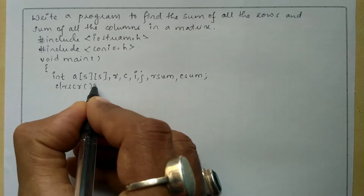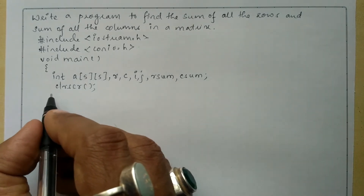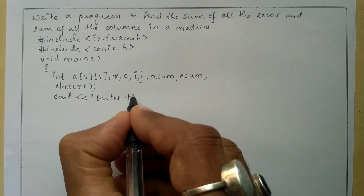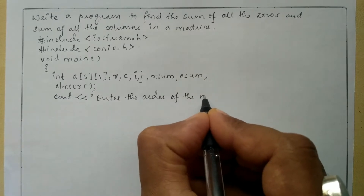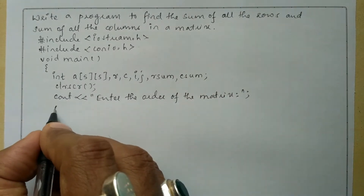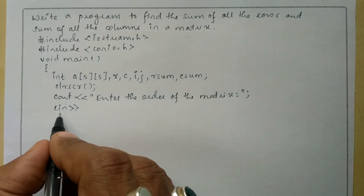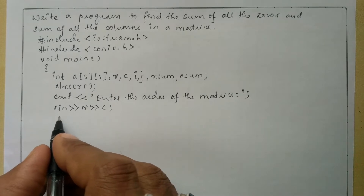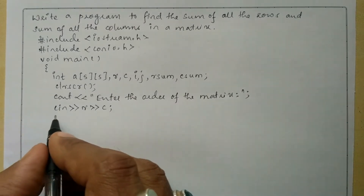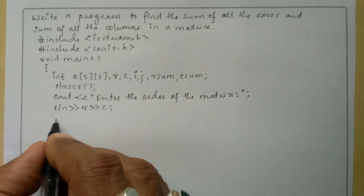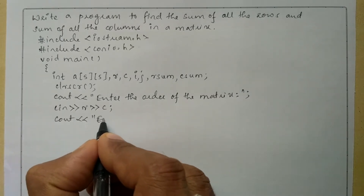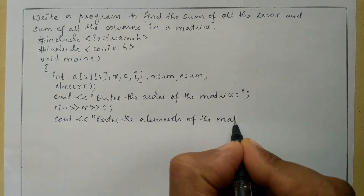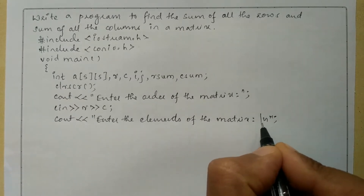Now let us write the clrscr() function, which is used to clear the screen. We will ask the user to enter the order of the matrix using cout with the stream insertion operator: "Enter the order of the matrix". Then we receive the response from the user through the keyboard using cin with stream extraction operator, receiving row and column. After that we ask the user to enter the elements of the matrix using cout: "Enter the elements of the matrix" followed by a newline.